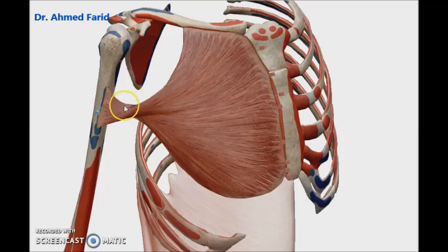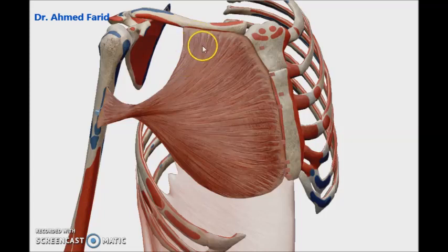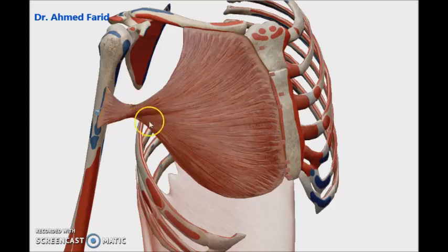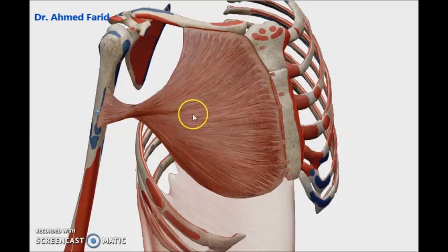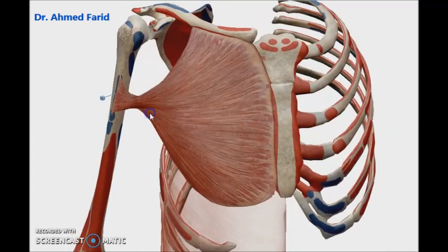The muscle converges to be inserted into the lateral lip of the bicipital groove of the humerus. The muscle is twisted before insertion so that the clavicular fibers are anterior and the sternocostal fibers are posterior — this is called the bilaminar tendon or spiral tendon of the pectoralis major, forming the anterior axillary fold.